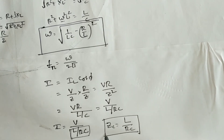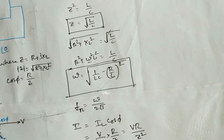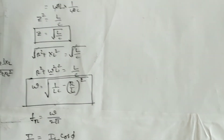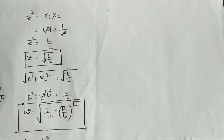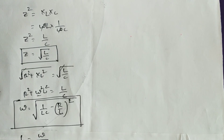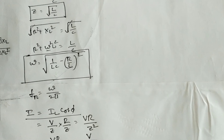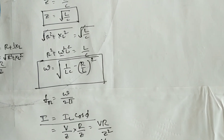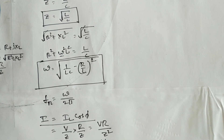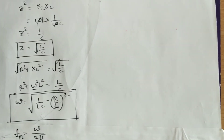This concludes the derivation of parallel resonance. The graphical representation of parallel resonance is quite opposite to that of series resonance. At resonance the current is minimum because it has only the active component and the reactive component is zero. Therefore this circuit is considered a rejector circuit, whereas the series resonance circuit is an acceptor circuit — here the current is minimum and the impedance is maximum.